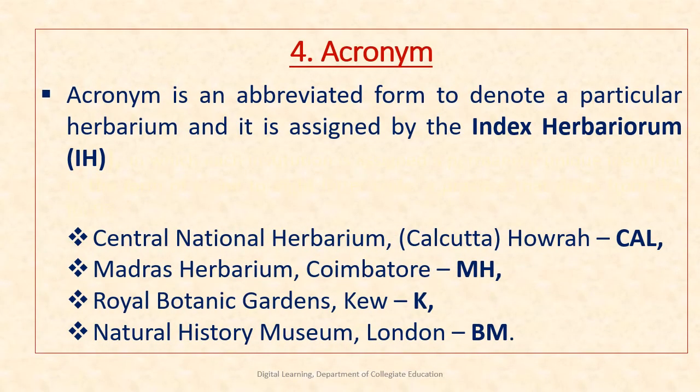Regarding the use of acronyms for different herbaria: an acronym is an abbreviated form to denote a particular herbarium, assigned by Index Herbariorum (IH), in which each institution is assigned a permanent unique identifier in the form of a 1 to 8 letter code — a practice dating from the founding of IH in 1935. Examples include: Central National Herbarium Calcutta — CAL, Madras Herbarium Coimbatore — MH, Royal Botanical Garden Kew — K, Natural History Museum London — BM.